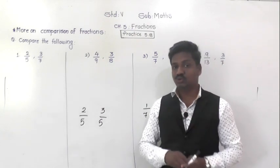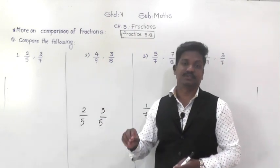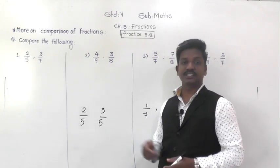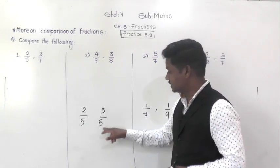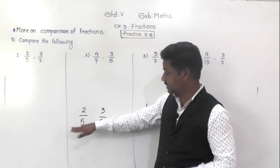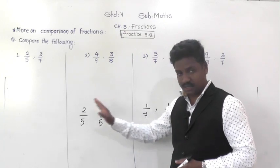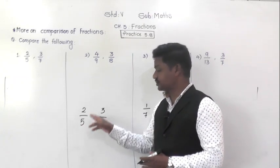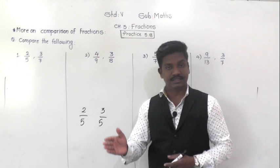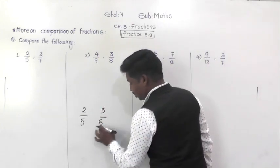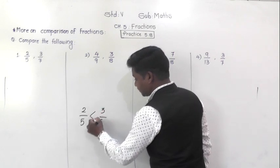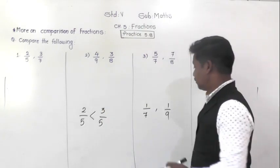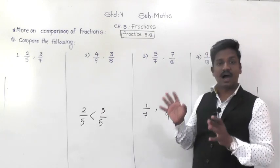Let us first revise. If denominators are same, which fraction is greater? Take 2/5 and 3/5 — denominators are same. When denominators are same, the fraction having the greater numerator is the greater fraction. So 2/5 is less than 3/5.